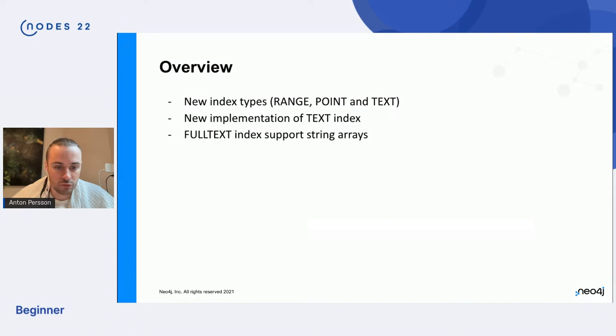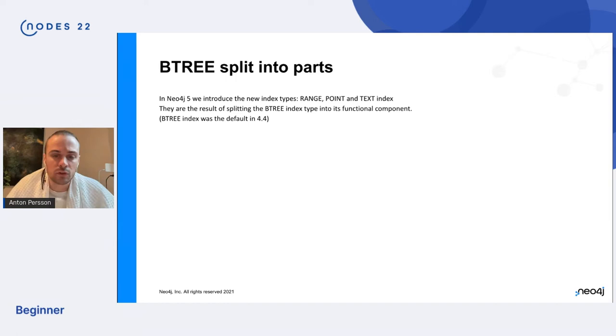So starting from the top, the new index types. This part of the update in Neo4j 5 is you can think of it as a spring clean, meaning a realigning of the surface that will better service in the future. And what we've done is we've taken the Btree index type and we've split it into its functional components, namely range point and text. So let's dive into this a little bit what that means.